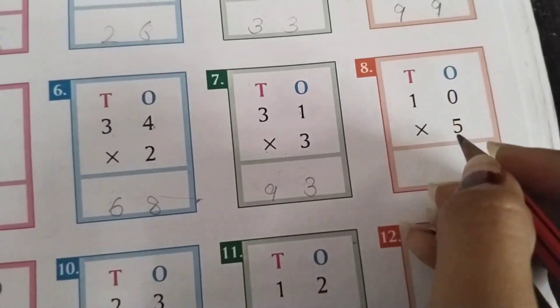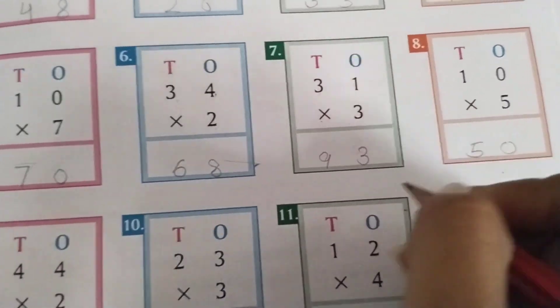10 multiplication 5. 5 0s are 0. 5 1s are 5. 50 will be the answer.